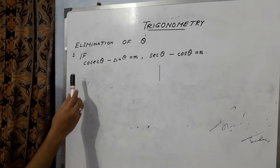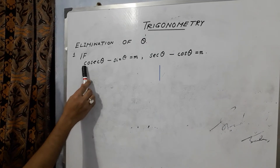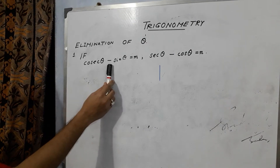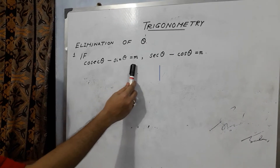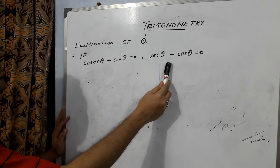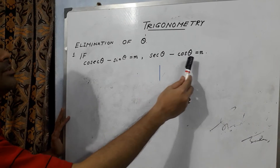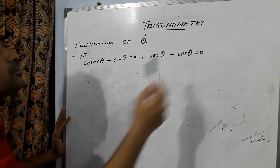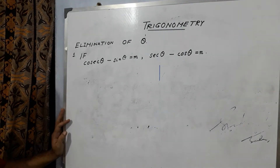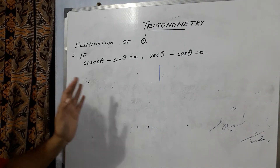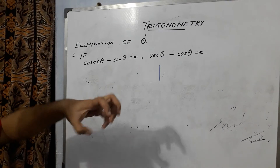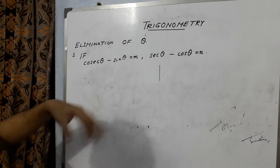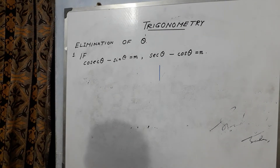The question here is: cosec theta minus sin theta is equal to m, sec theta minus cos theta is equal to n. You have to eliminate theta.